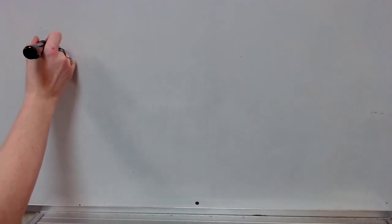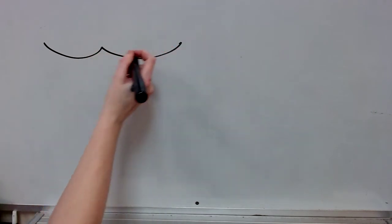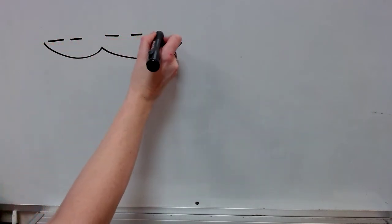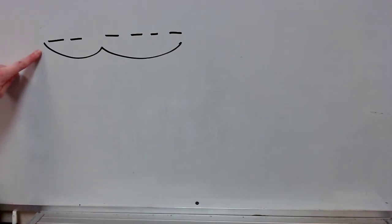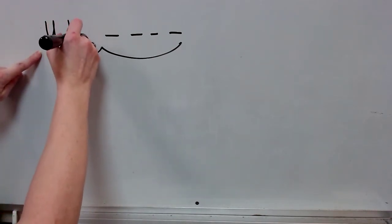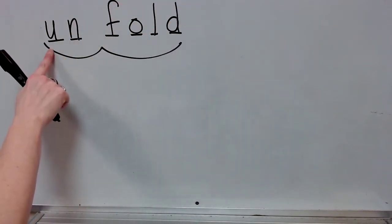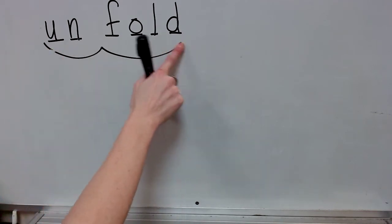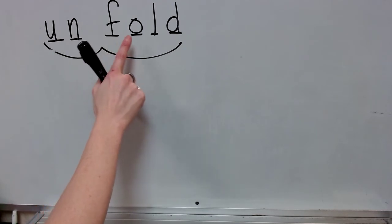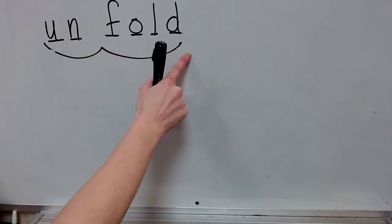Now let's practice spelling these words. Our first practice word today is unfold. Our syllables: prefix un and base word fold. Stretch: un-fold. Write the spelling for unfold. Check it and correct it. Spell unfold. Yes, unfold.